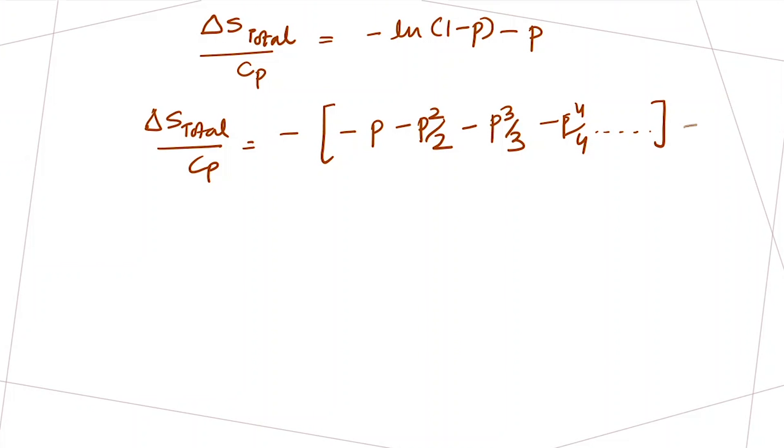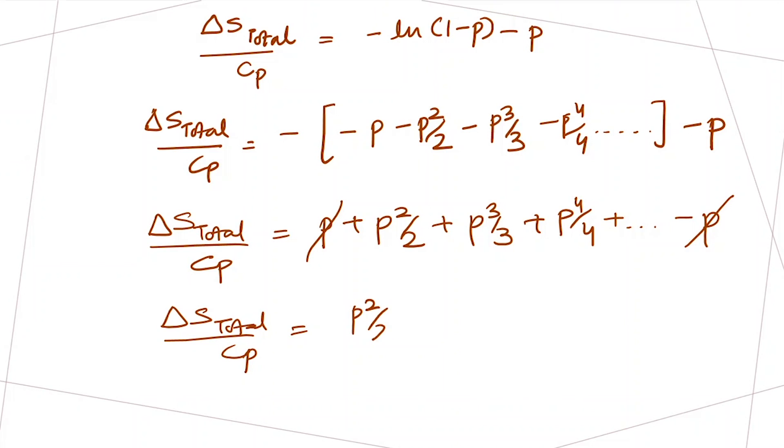This is minus P minus P squared by 2 minus P cubed by 3 minus P to the fourth by 4 and so on, and this is minus P. When we take this minus sign inside, our expression becomes positive terms.